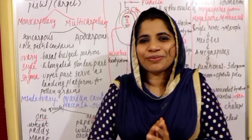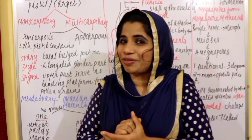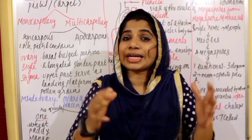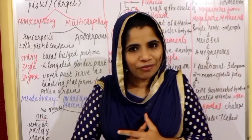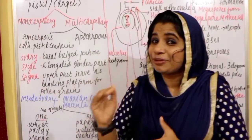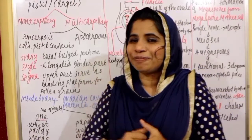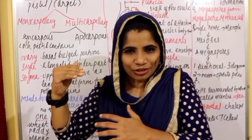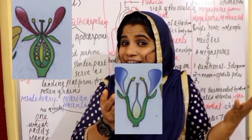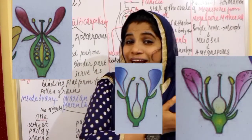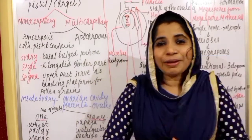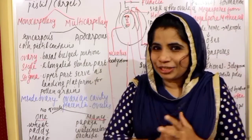By Gynoecium — we learned this in first year — Gynoecium is the female reproductive part of the flower. Based on the position of the Gynoecium, flowers are divided into epigynous, perigynous, and hypogynous.